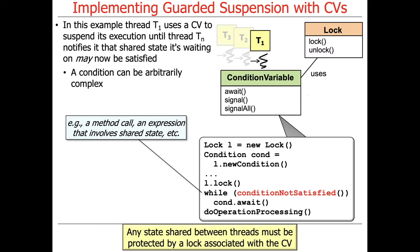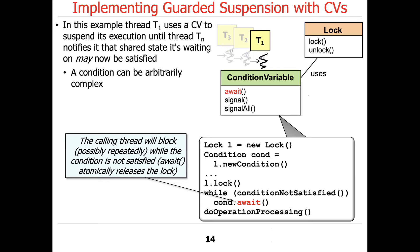Any state shared between threads must be protected by a lock that's associated with the condition variable. The calling thread will block, possibly repeatedly in the loop, while the condition is not satisfied. It will keep waiting even if awakened by another thread that thought the condition might be satisfied. The way you block as a calling thread is by using the await method, which does two things atomically: it releases the lock and goes to sleep on the condition.